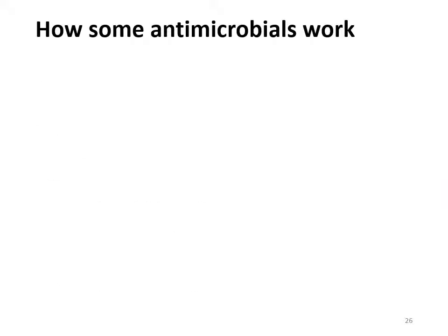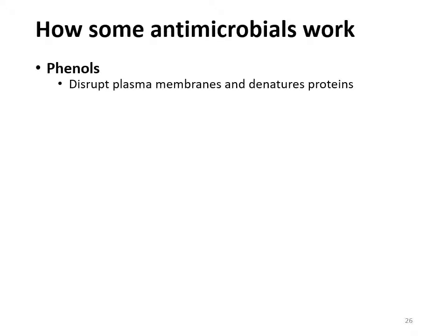Now let's think about actual examples of antimicrobials and how they work. The first ones are phenols — very rough, harsh agents that tend to destroy bacteria by messing up their plasma membranes and denaturing their proteins. Then we have alcohol — put a star next to that and ask yourself why this one is not a great antimicrobial. We just mentioned it: it evaporates too quickly. Whenever you see alcohol, that's what to remember.